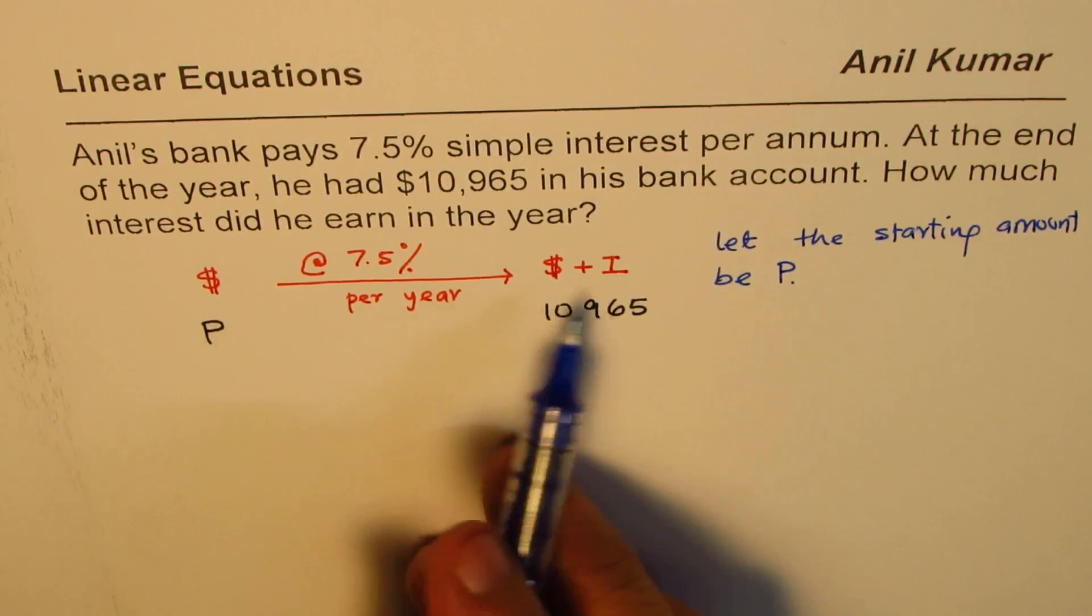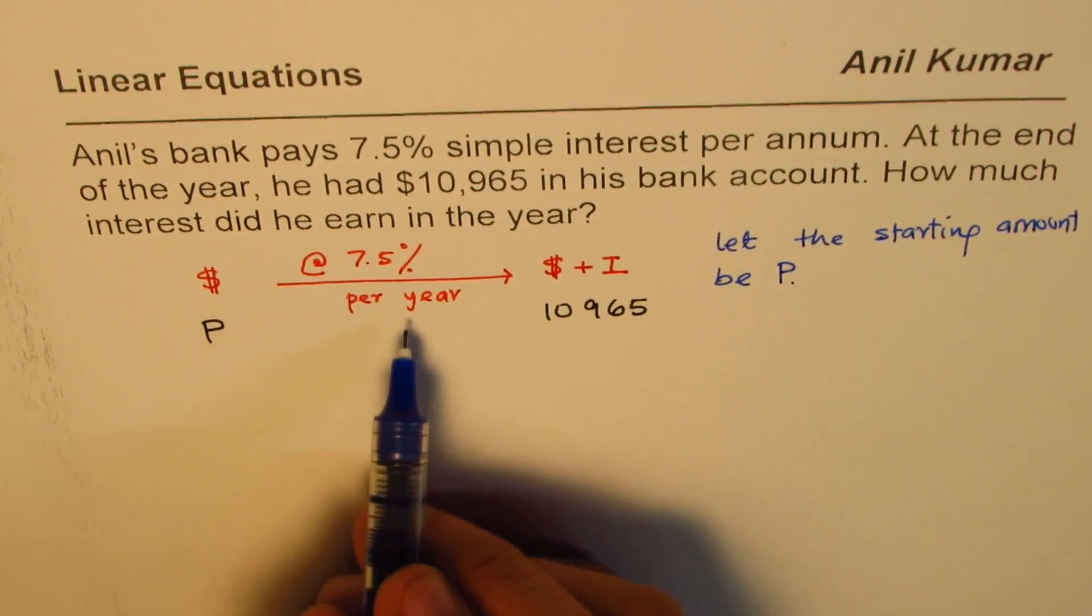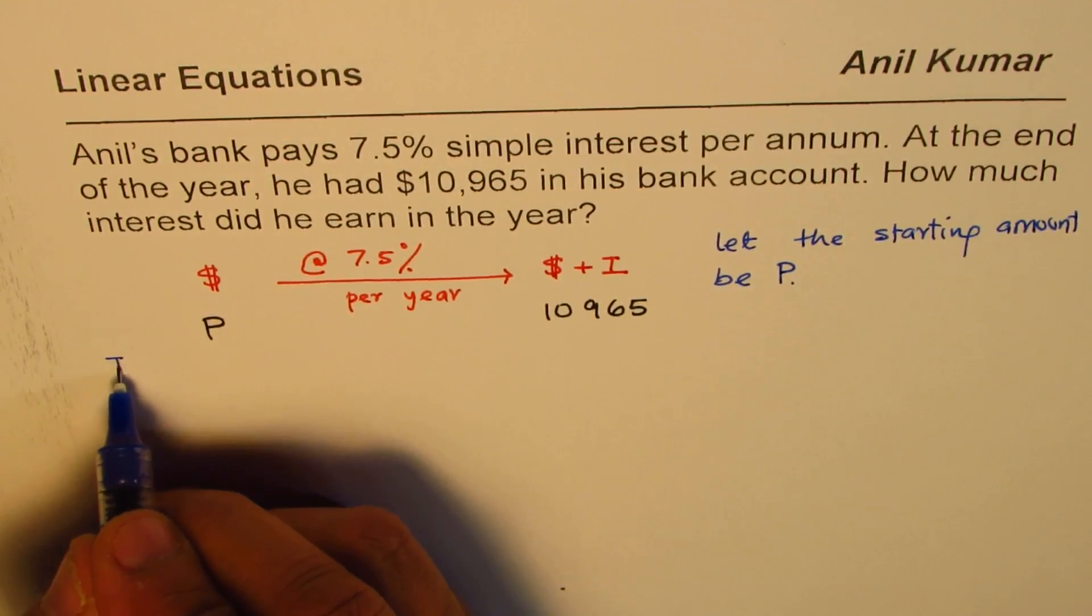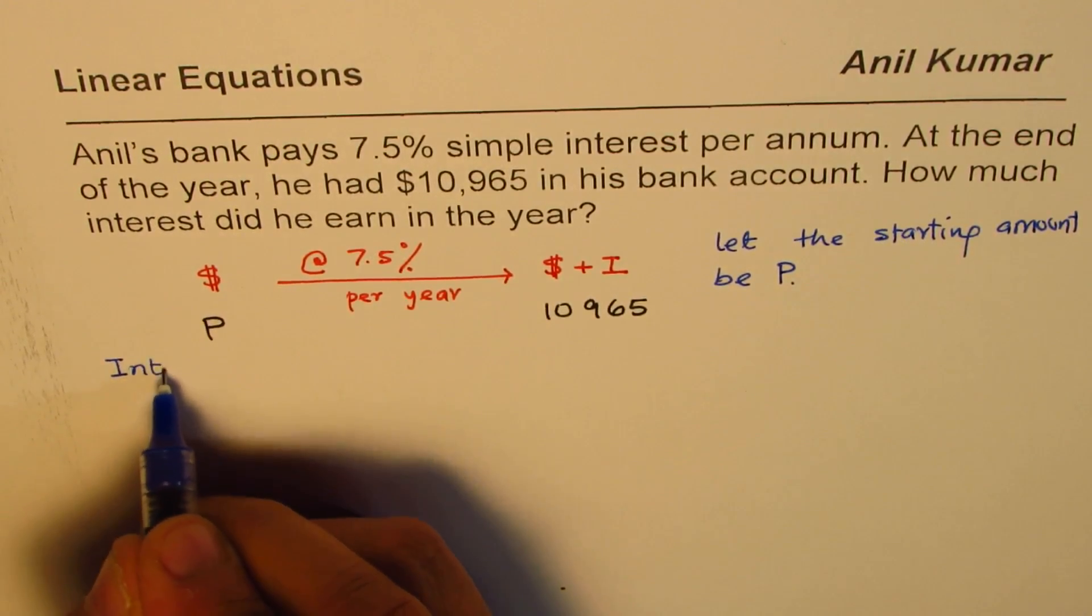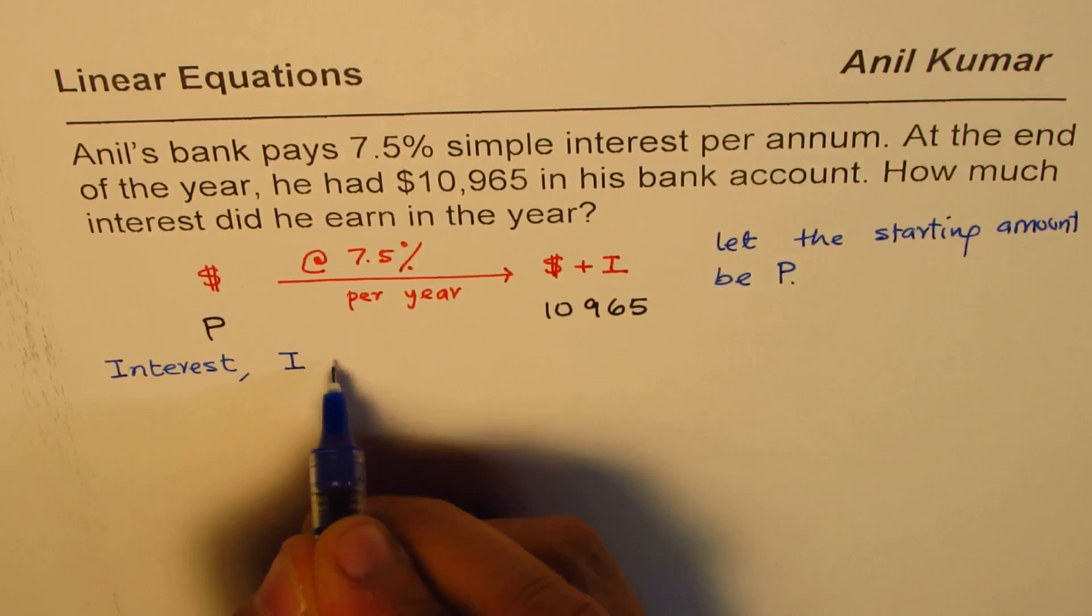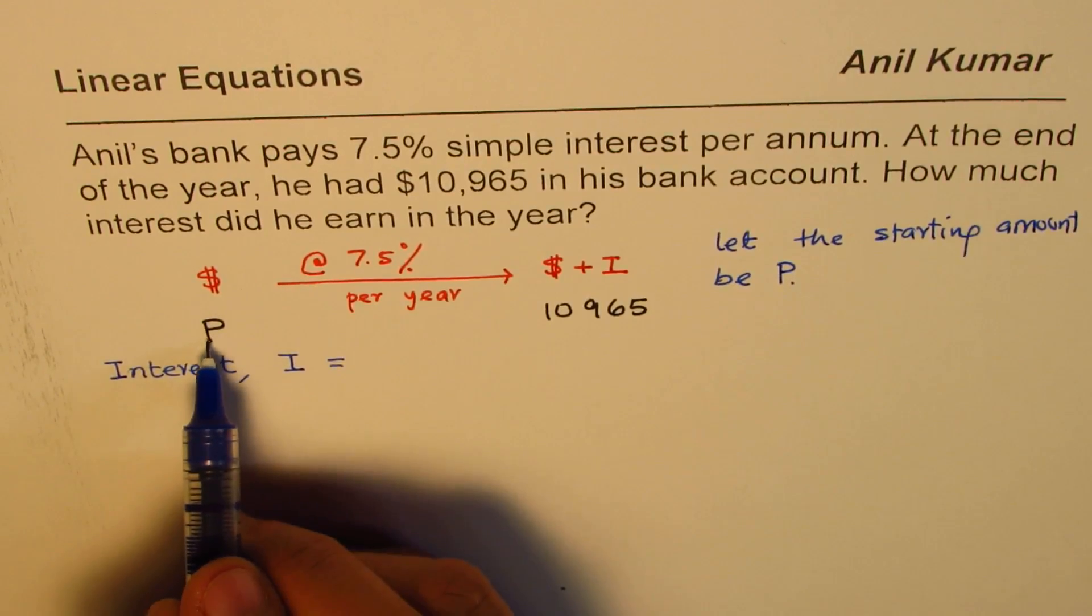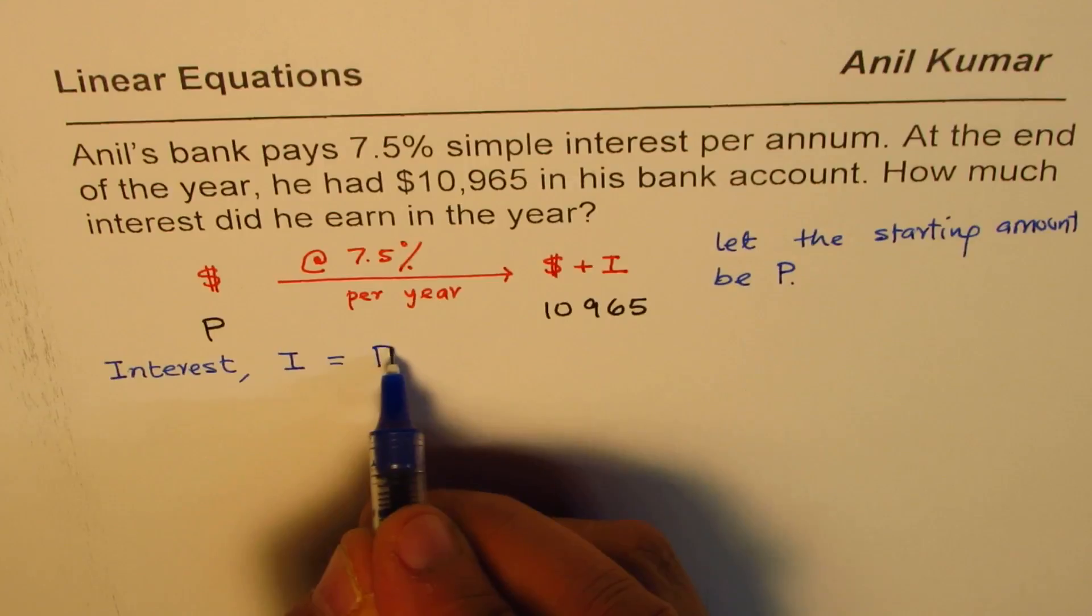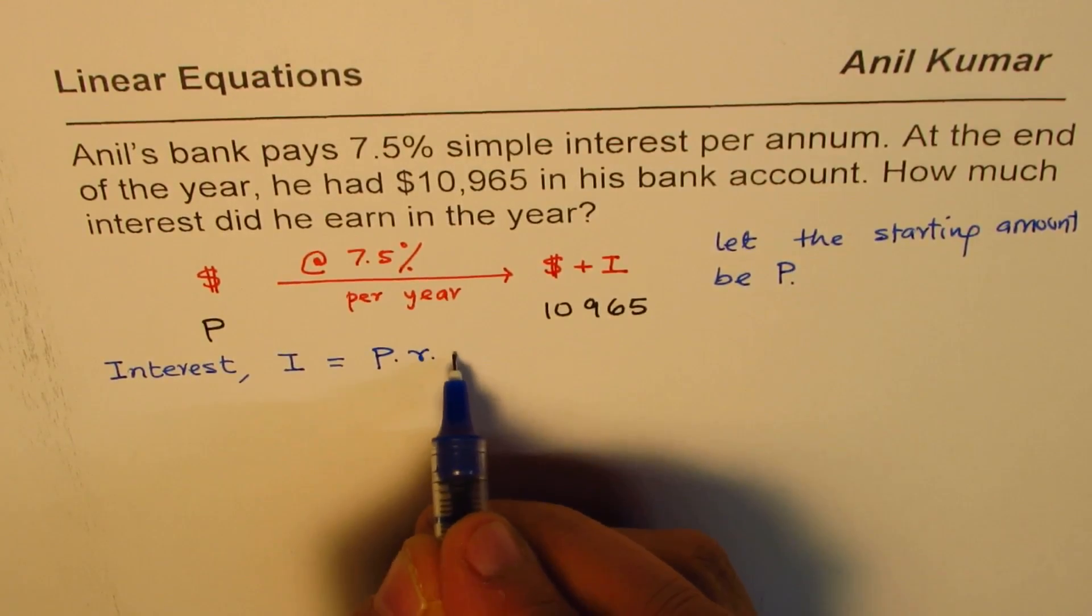Now, how does that get translated? Really speaking, what gets added up is the interest. So, if you keep money in the bank, you get interest. We'll say interest is I for us and how much interest? It is based on the amount and the rate of interest. So, the formula is very simple. It is P times R times T.